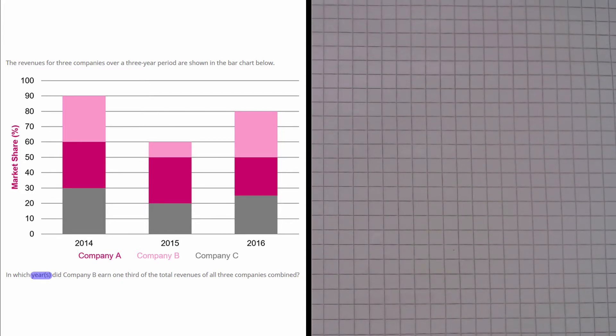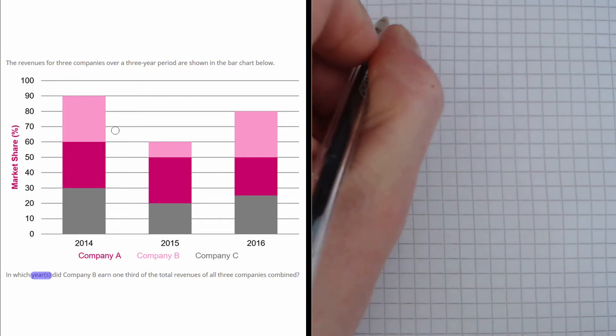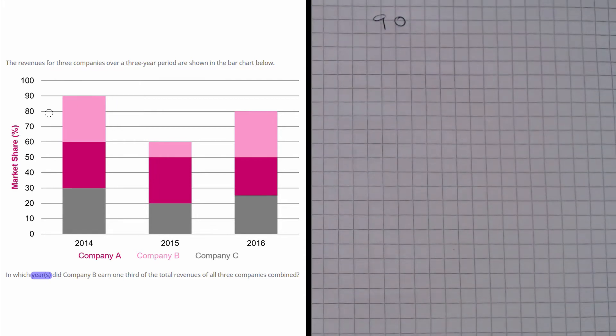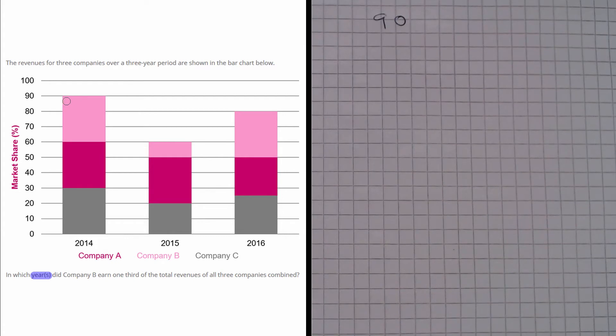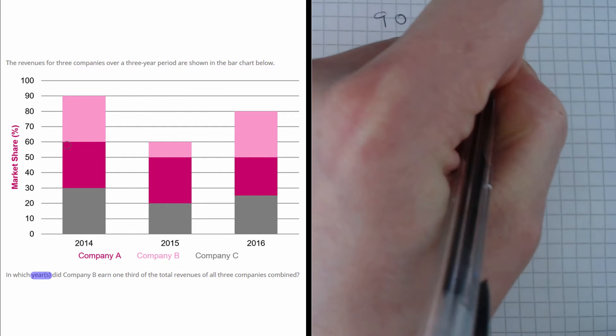So let's have a look in 2014, well we can see the total height there is 90%. So total height is 90. And Company B, we can see the width of that block, we go between 90 and 60. So 90 minus 60 is 30.